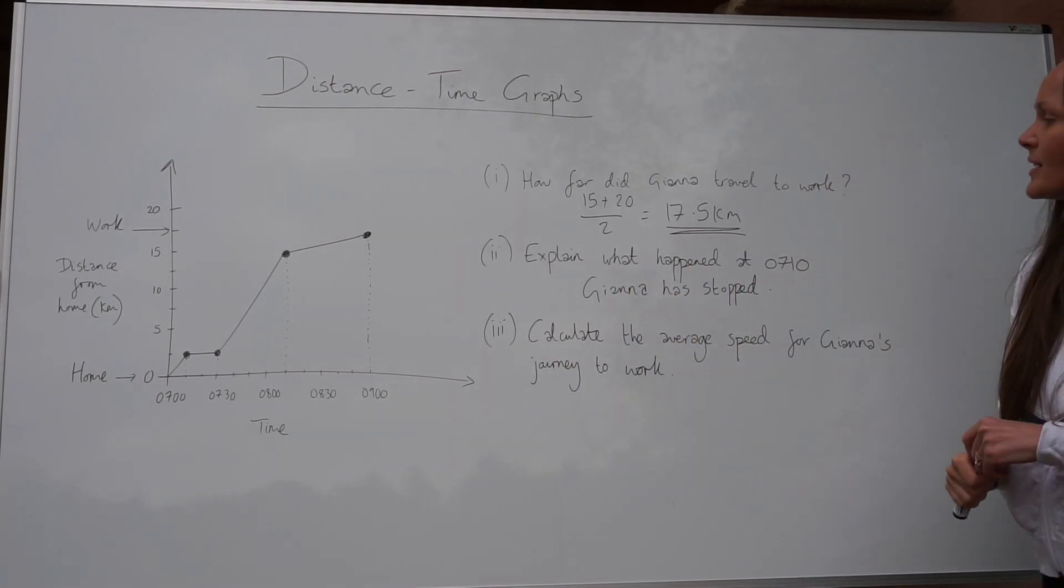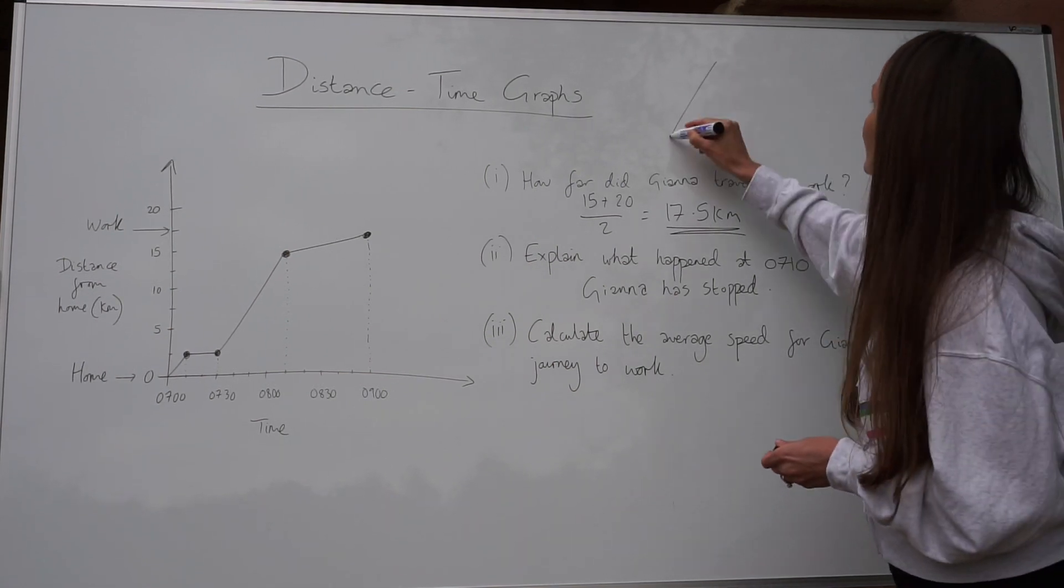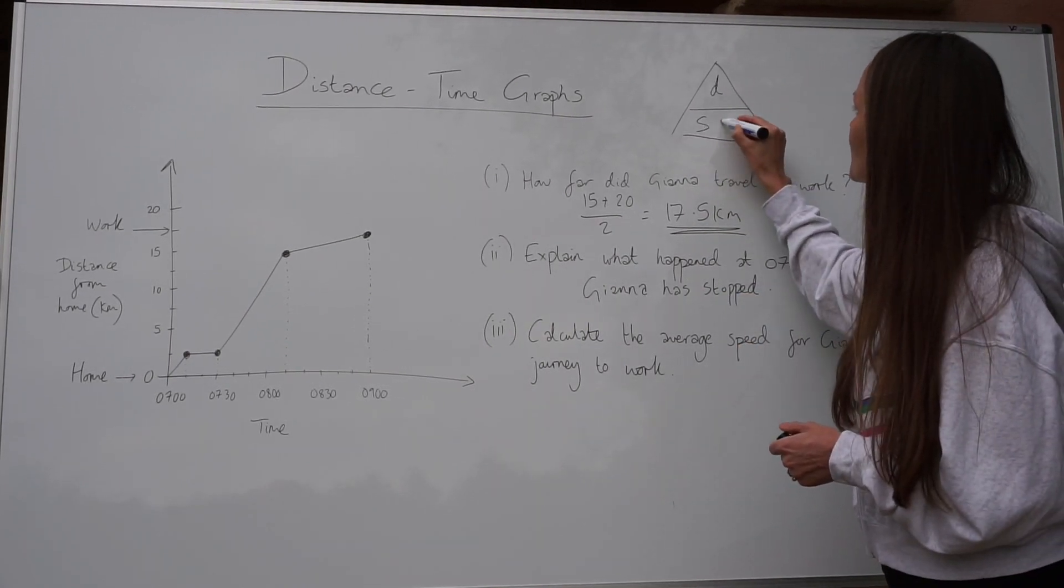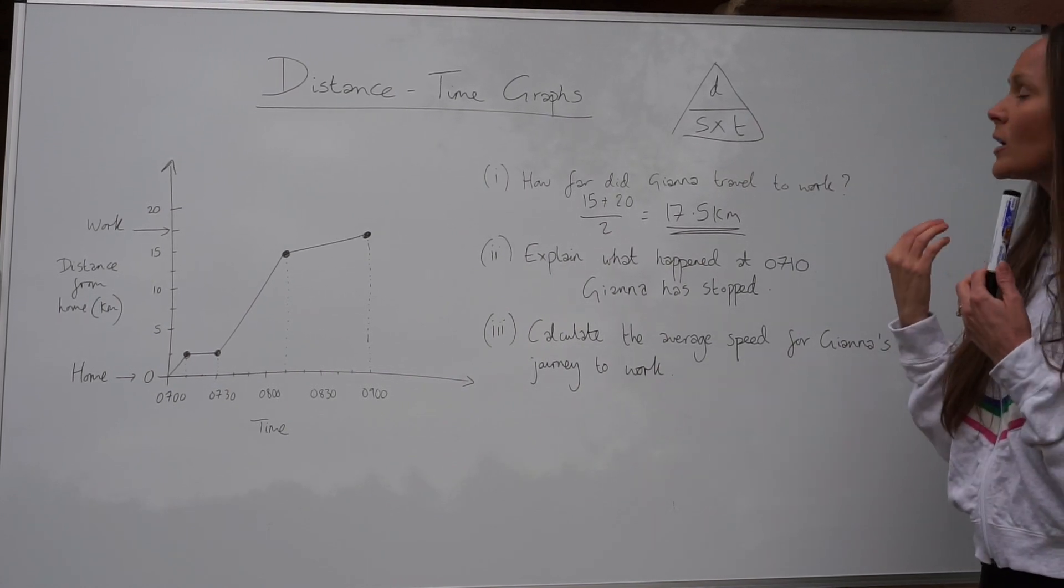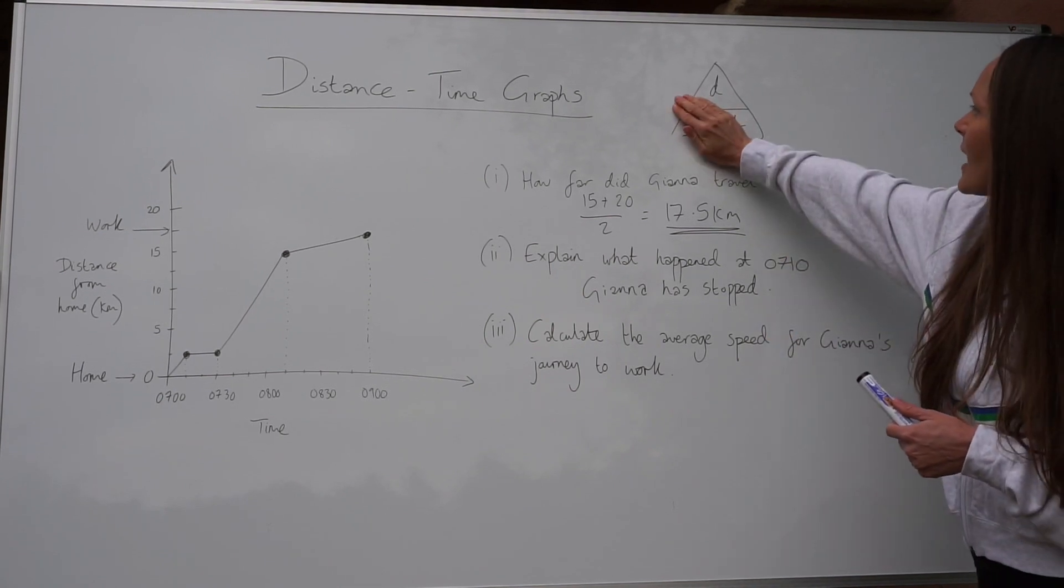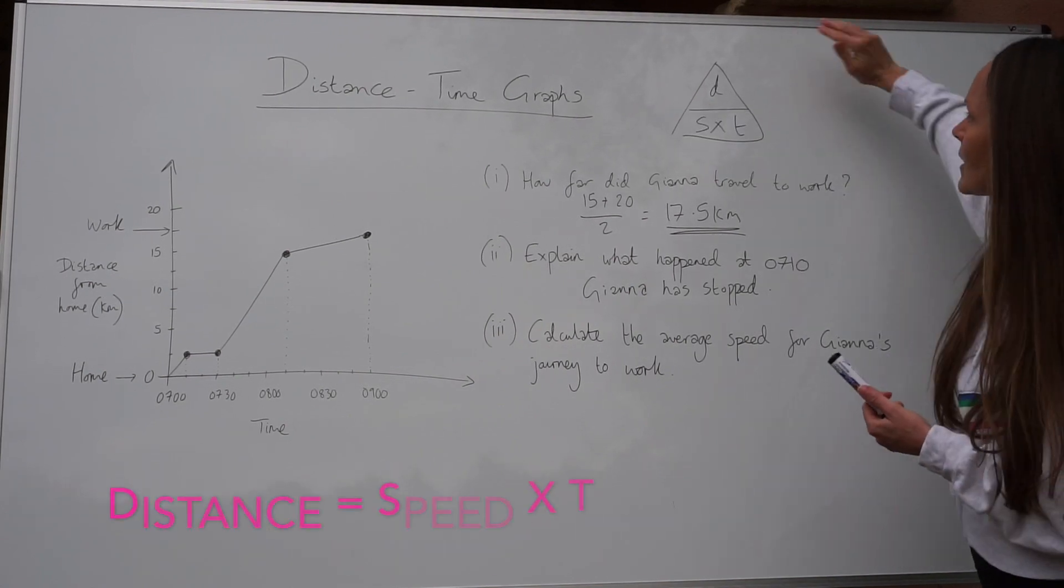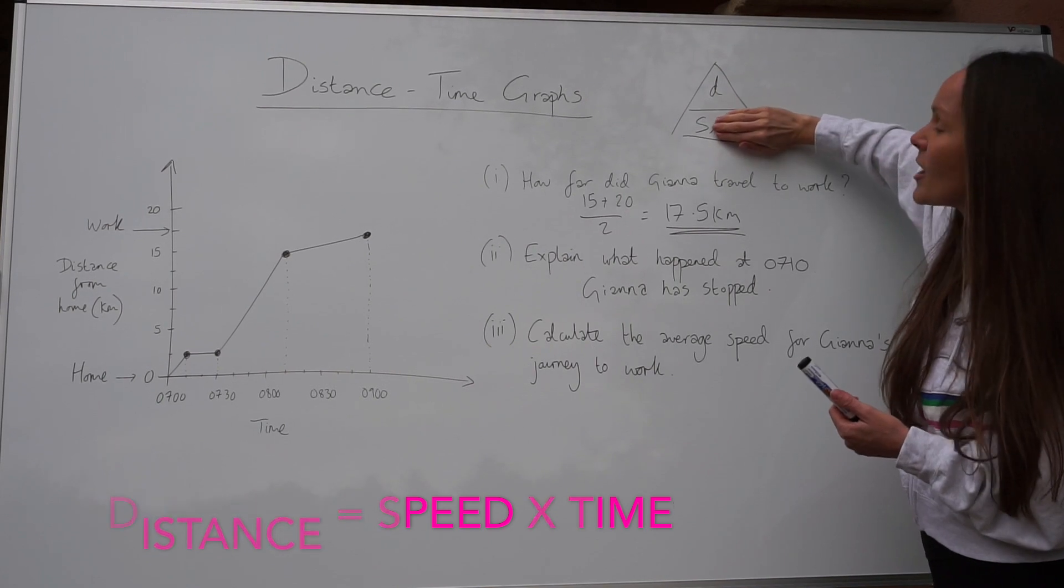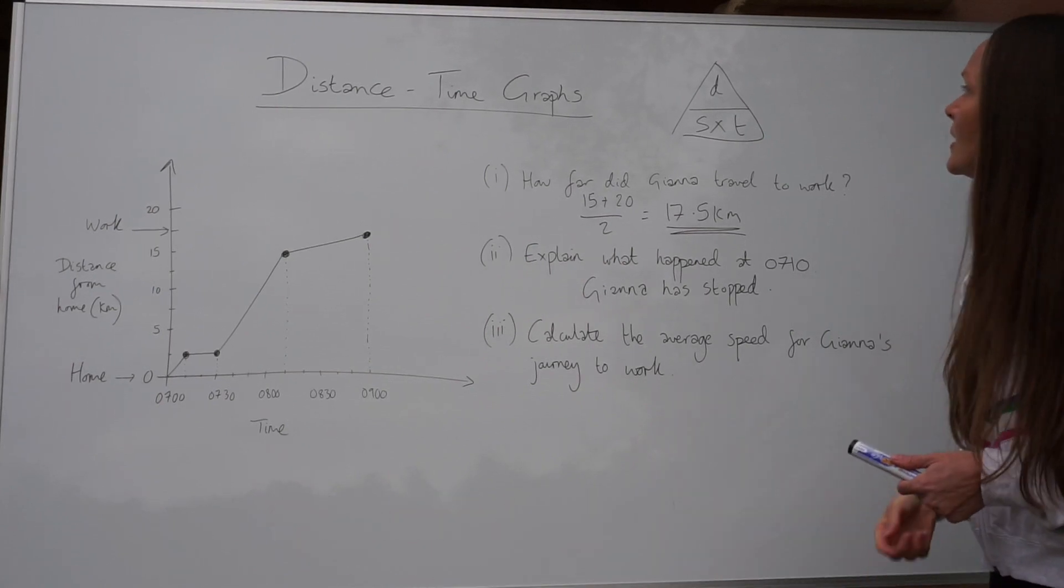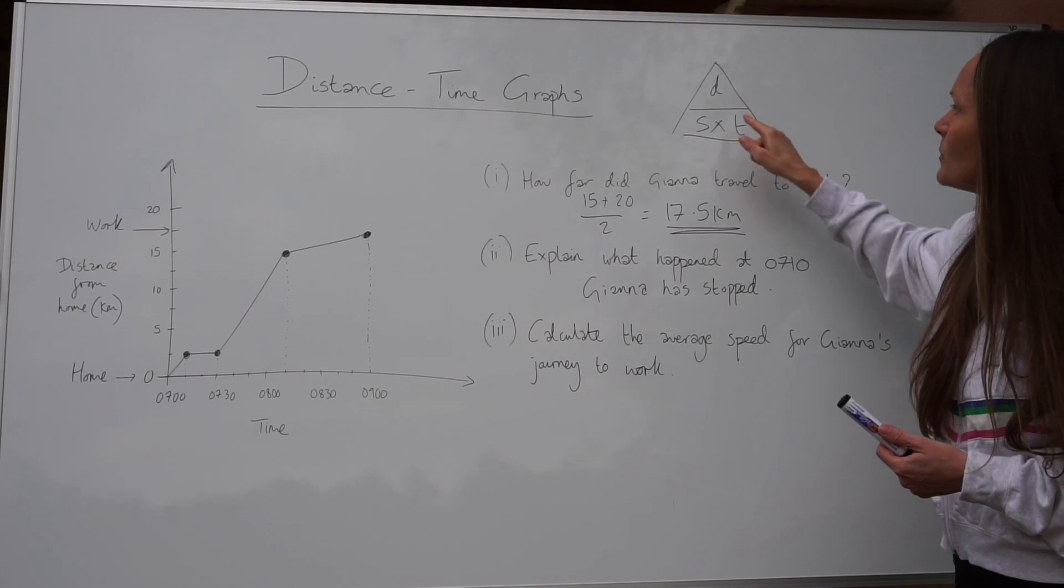For part three, the last part, it says calculate the average speed for Gianna's journey to work. So I teach my students this triangle connecting speed, distance and time. Distance being at the top and speed and time underneath. That way you can cover the letter that you're trying to find. So in this case, speed, and it tells you how you would calculate speed. So we need to divide distance by time. If you're working out distance, it's speed times time. And if you're working out time, it would be distance divided by speed. So it's quite a useful triangle to remember. I always say that D goes at the top because D is first in the alphabet before S and T.